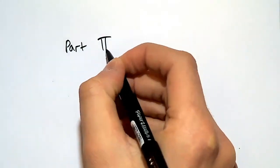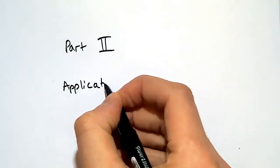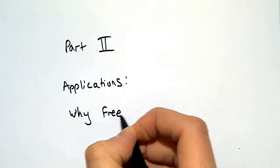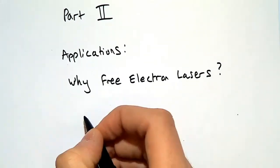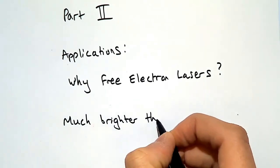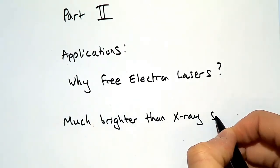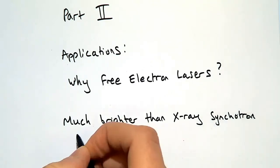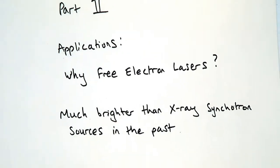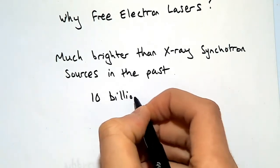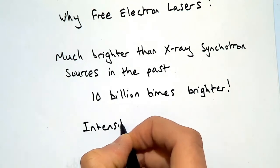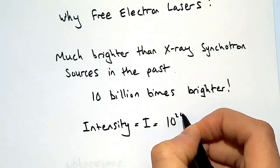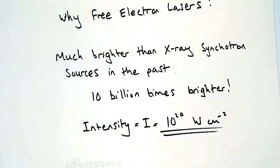In the second part of this video on free electron lasers, we will look at the applications of the X-rays produced. The brightness of X-rays produced by free electron lasers far exceeds that of conventional synchrotron sources used in the past. In fact, the brightness can often be up to 10 billion times brighter. The increased brightness often leads to far sharper X-ray diffraction images, which is one of the main uses of free electron laser X-rays. Related to the brightness is the intensity, which is sometimes said to be up to 10²⁰ watts per square centimeter. This is enough to punch through steel.